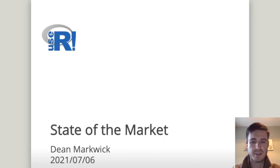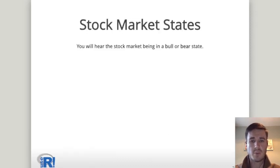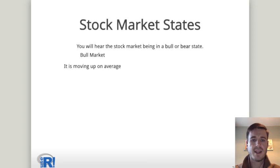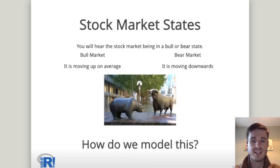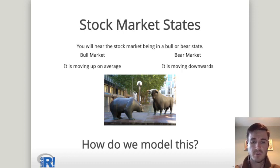In this talk I will show you how to use an infinite state hidden Markov model to help model the state of the markets. When it comes to the stock market, you'll hear it commonly being in a bull or bear state. If it's in a bull market this means it is moving up on average, and if it is in a bear market this means it is moving downwards on average. You'll commonly see statues of bulls and bears around stock exchanges around the world, but how does this help us model the stock market?